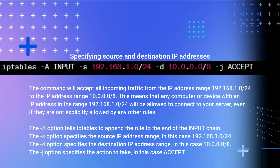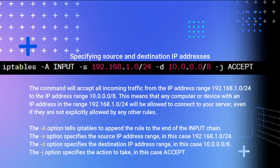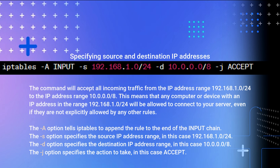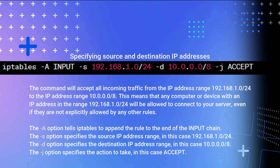Specifying Source and Destination IP Addresses: this command accepts all incoming traffic from the IP address range 192.168.1.0/24 to the IP address range 10.0.0.0/8. This means that any computer or device with an IP address in the range 192.168.1.0/24 will be allowed to connect to your server, even if not explicitly allowed by other rules. The -s option specifies the source range, -d specifies the destination range, and -j ACCEPT specifies the action.